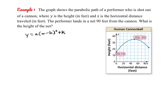I'm going to start by substituting my vertex, so y equals a times (x minus 50) squared plus 35. But we still have that a value to find. So we need to substitute the additional point we have, which in this case is (0, 15), to help us create our model. We're going to temporarily substitute that point: y equals 15, and then a times (0 minus 50) squared plus 35.